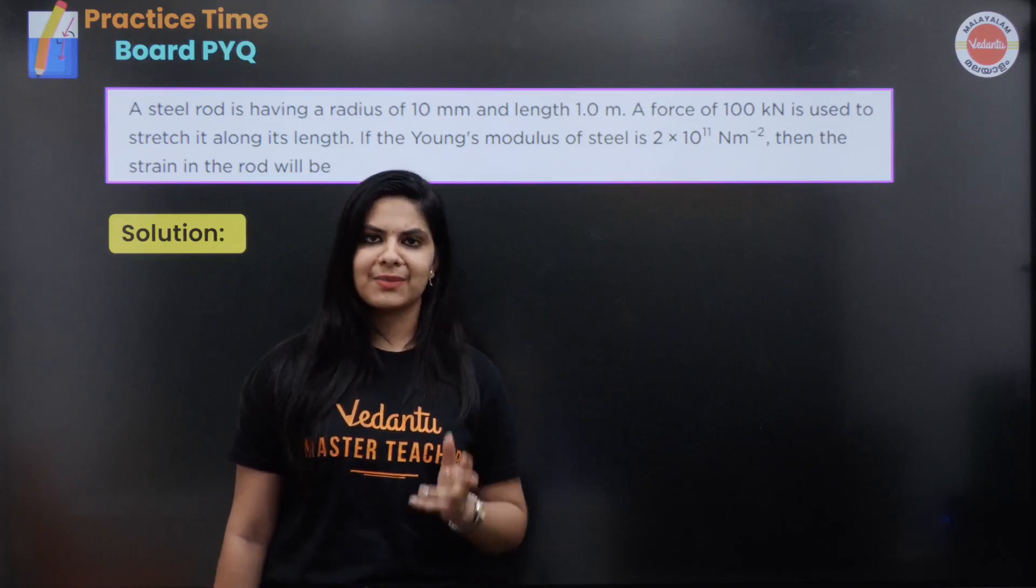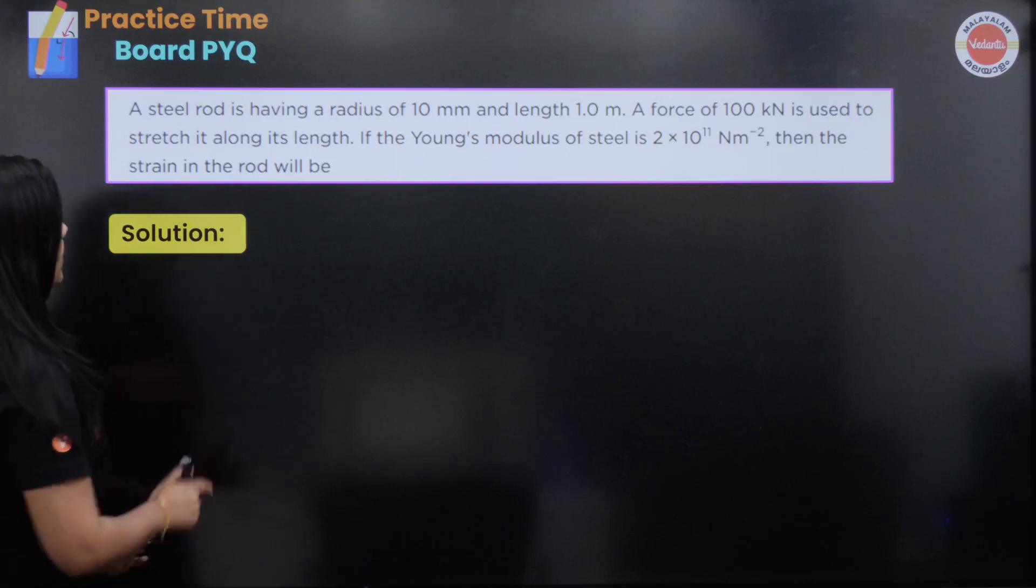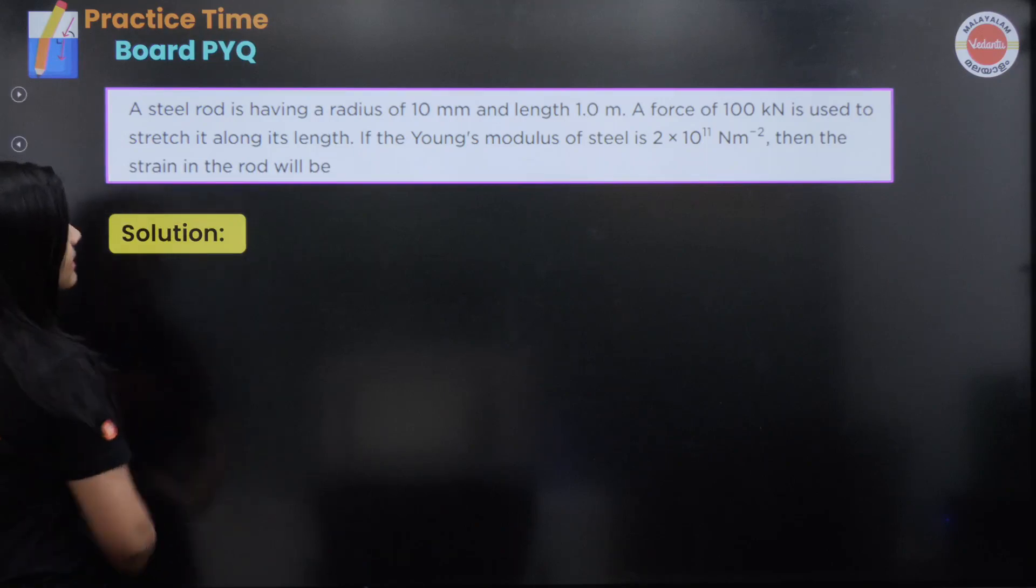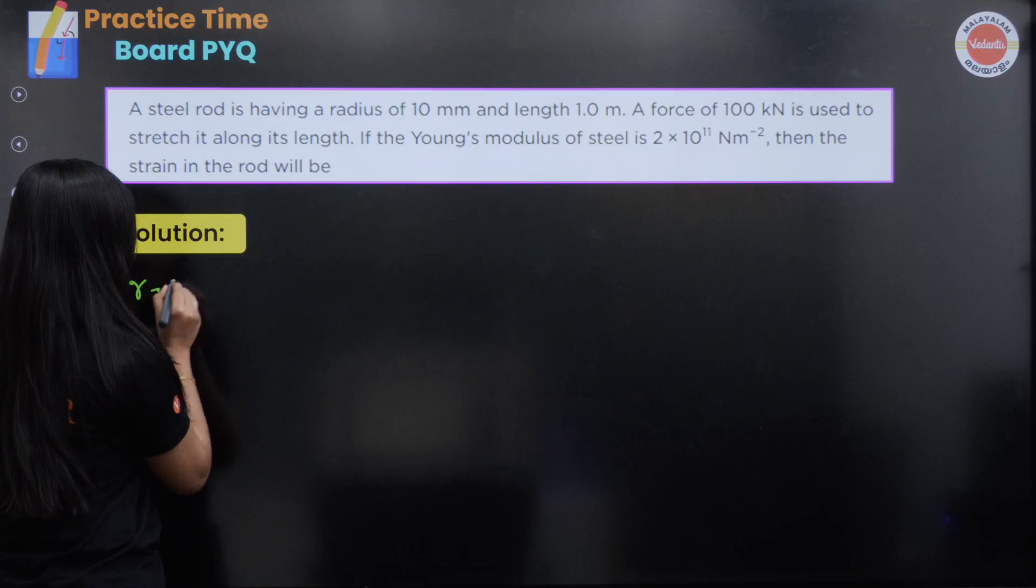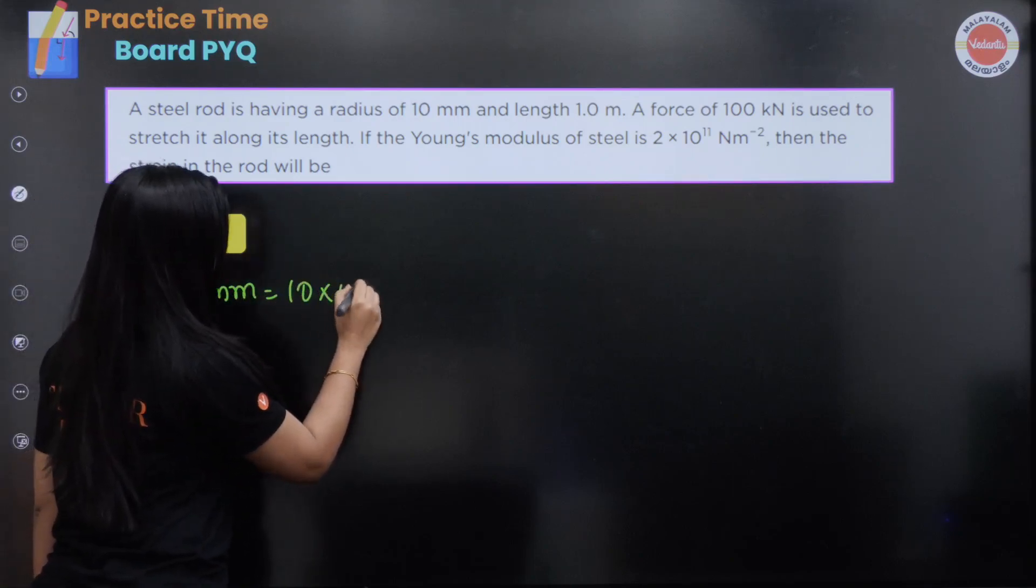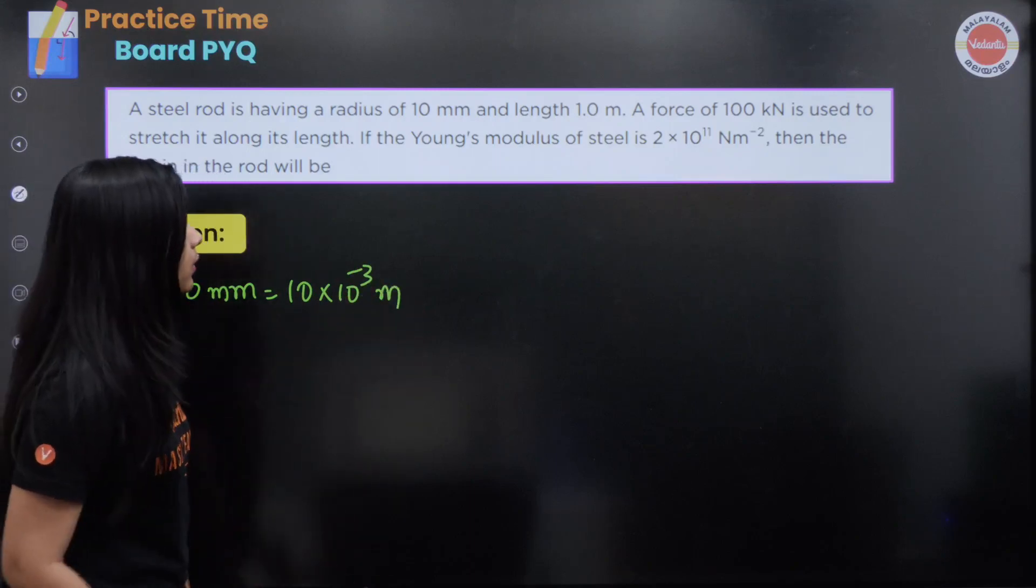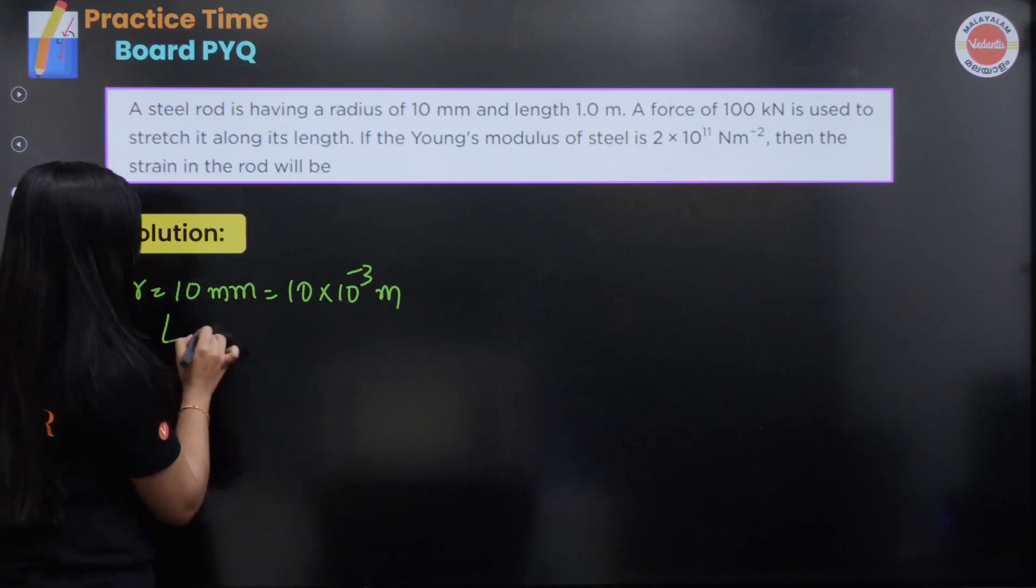This is a very easy question. A steel rod is having a radius of 10 millimeter, which is equal to 10 into 10 to the power minus 3 meter. We will convert it in a meter. Length is 1 meter.